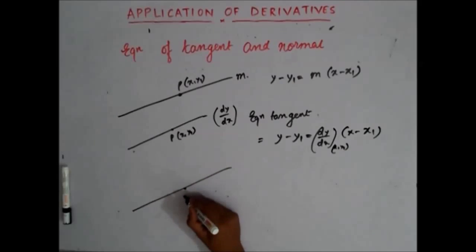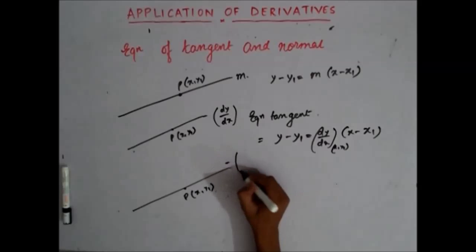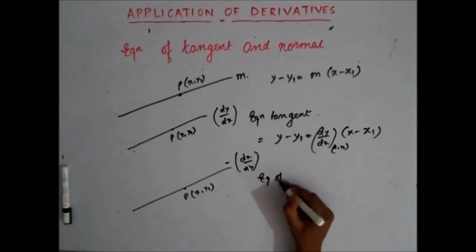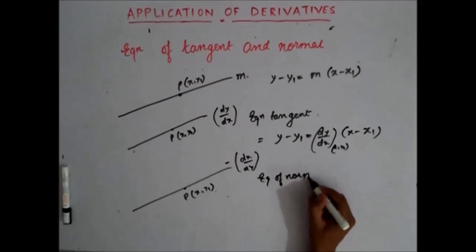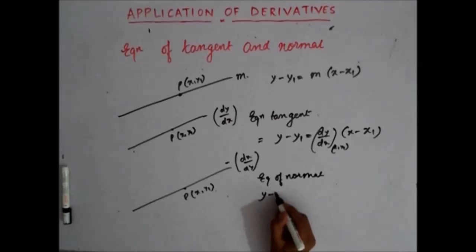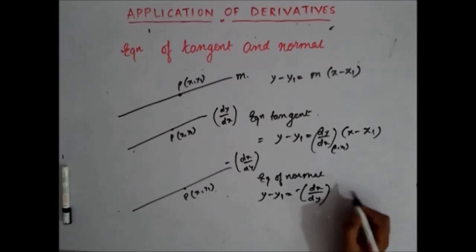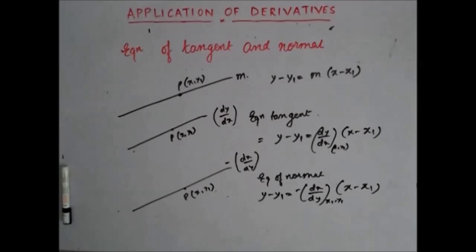Similarly, the equation of the normal will be—it passes through the same point but its slope is now minus dx/dy. So the equation of normal is: y minus y1 equals minus dx/dy at the point (x1, y1) times (x minus x1).